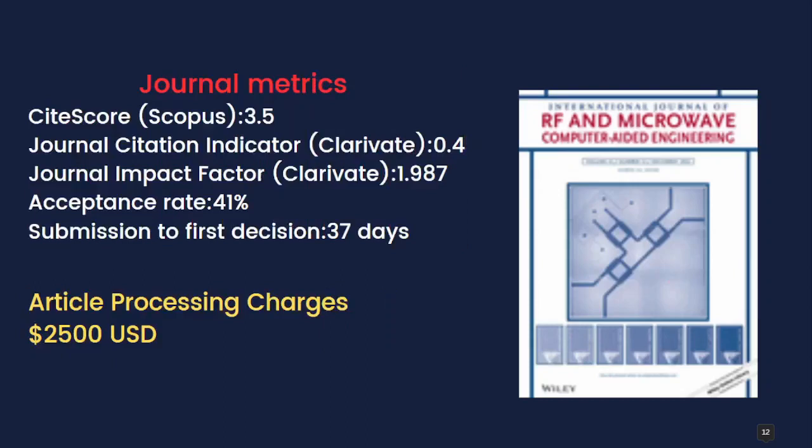Looking at journal metrics, the CiteScore from Scopus is 3.5. Journal Citation Indicator from Web of Science (Clarivate) is 0.4, and the Journal Impact Factor is 1.987. Acceptance rate is 41%. Submission to first decision is 37 days. Since it is open access, article processing charges are 2,500 US dollars.